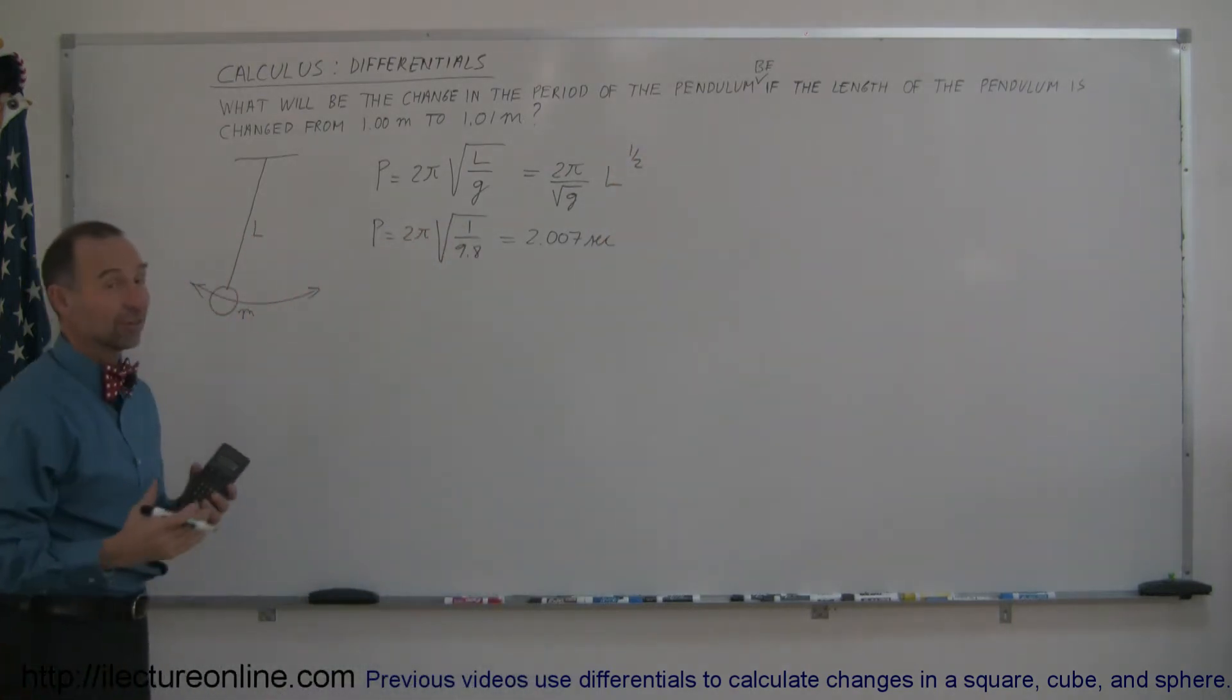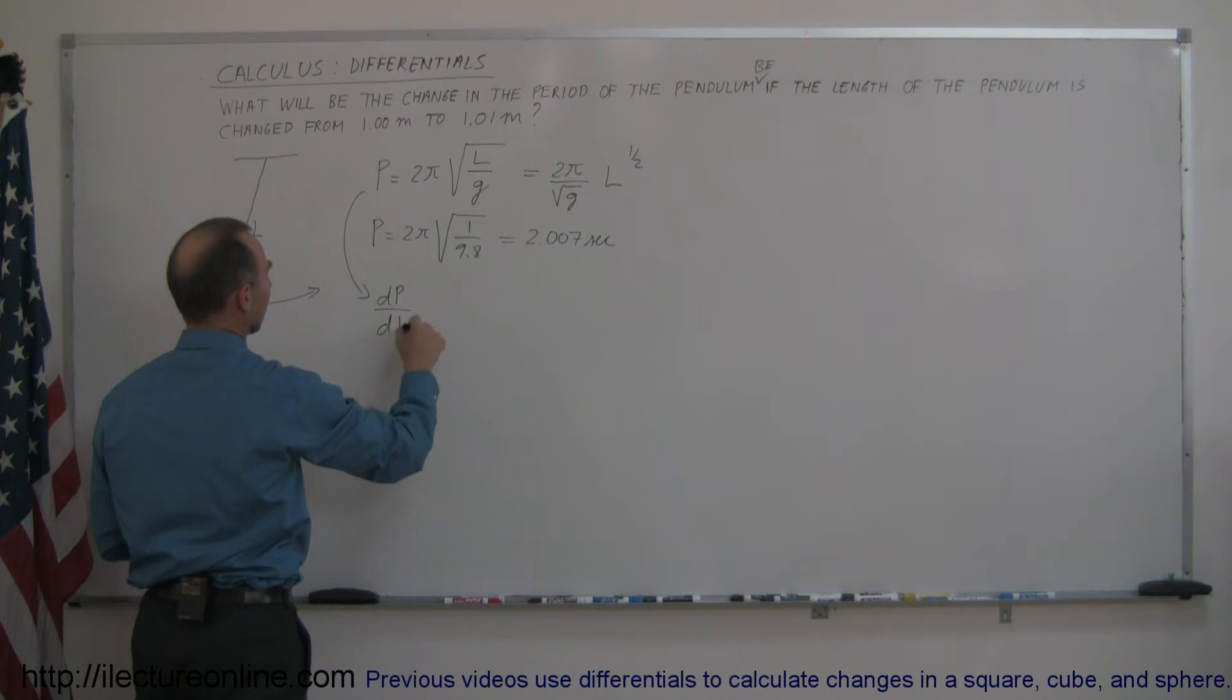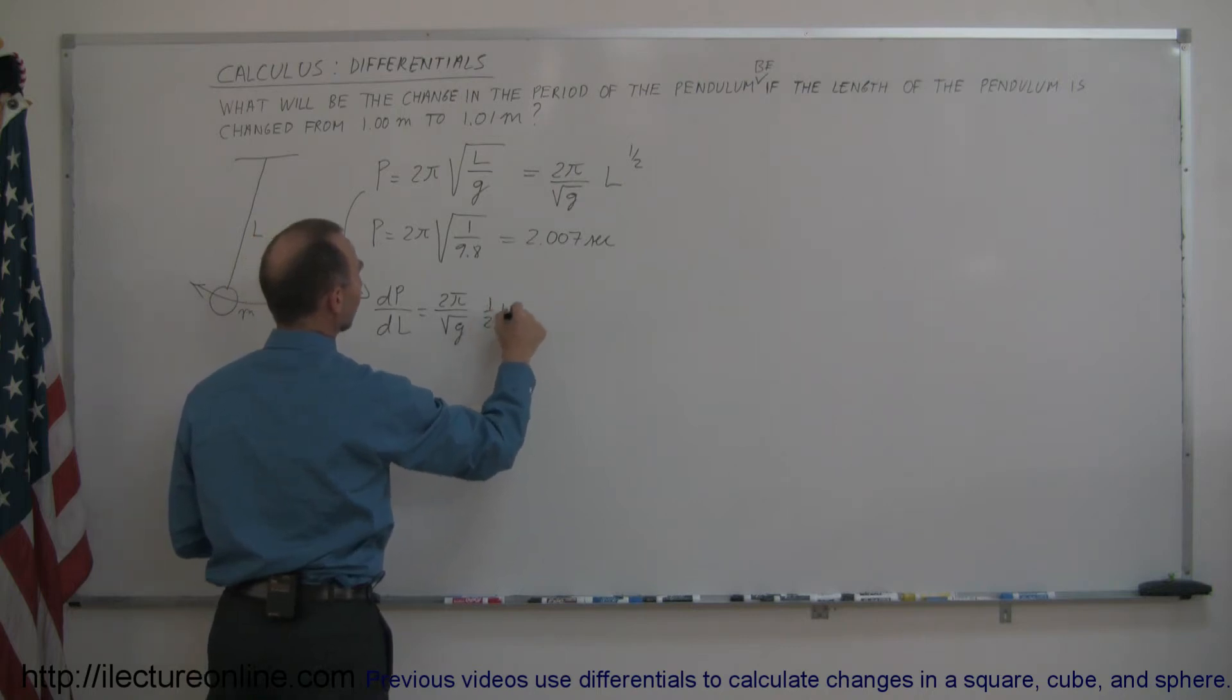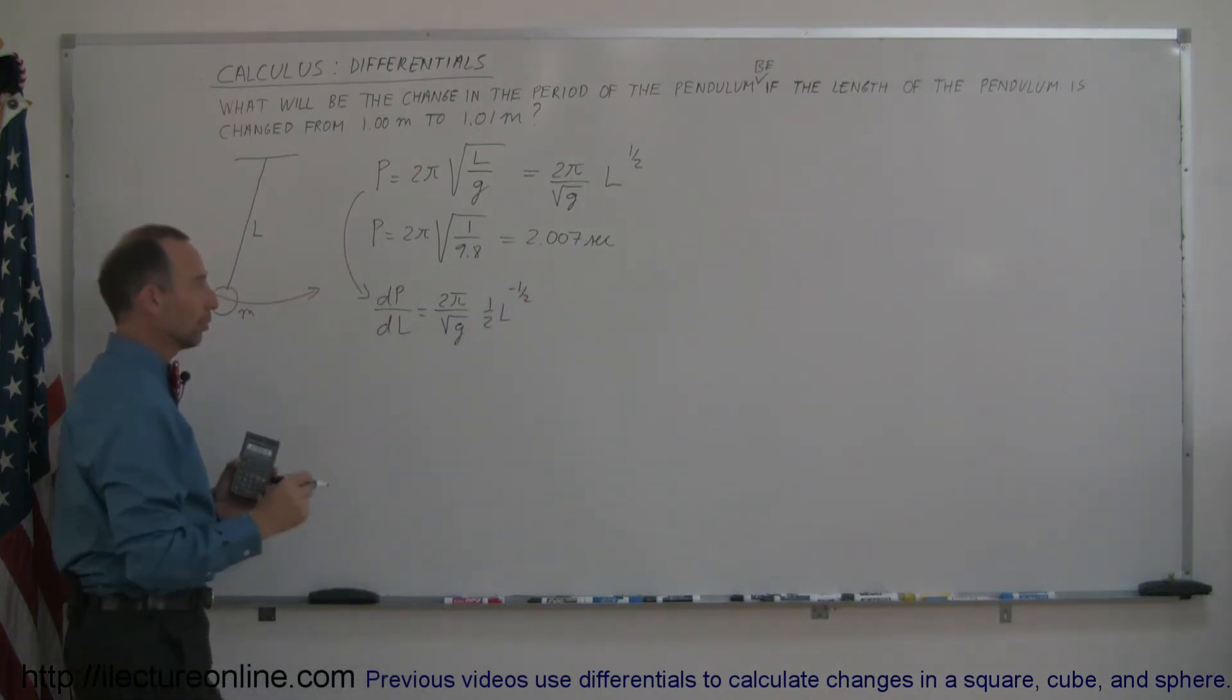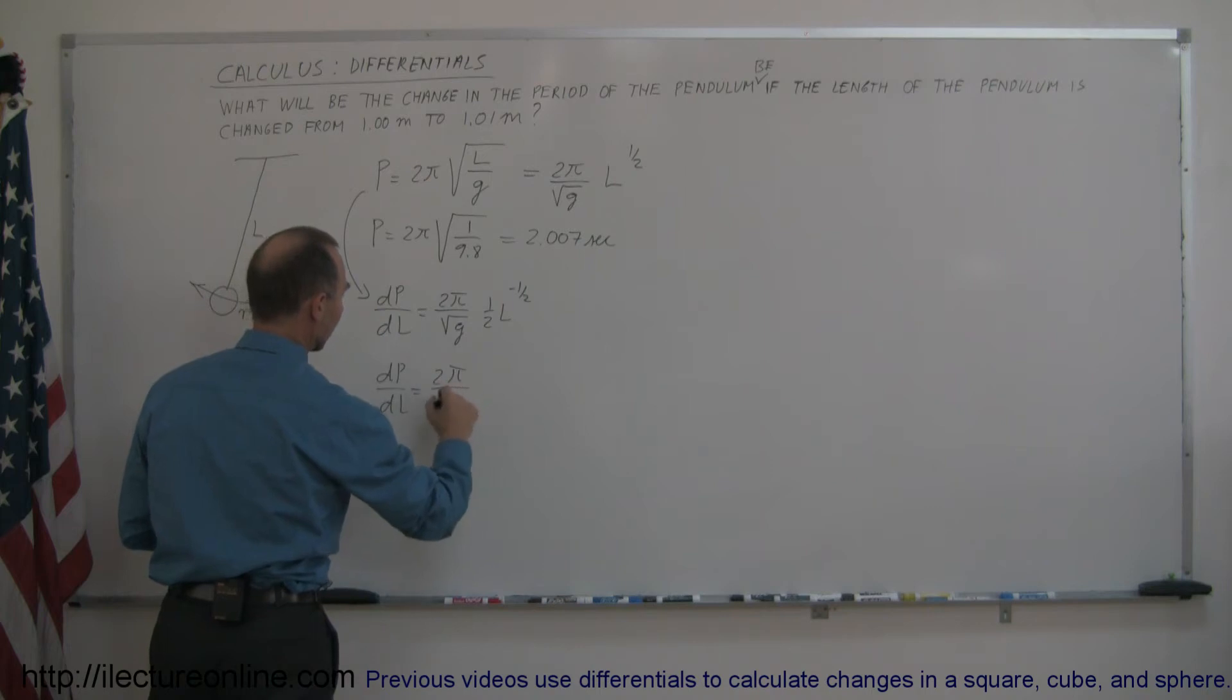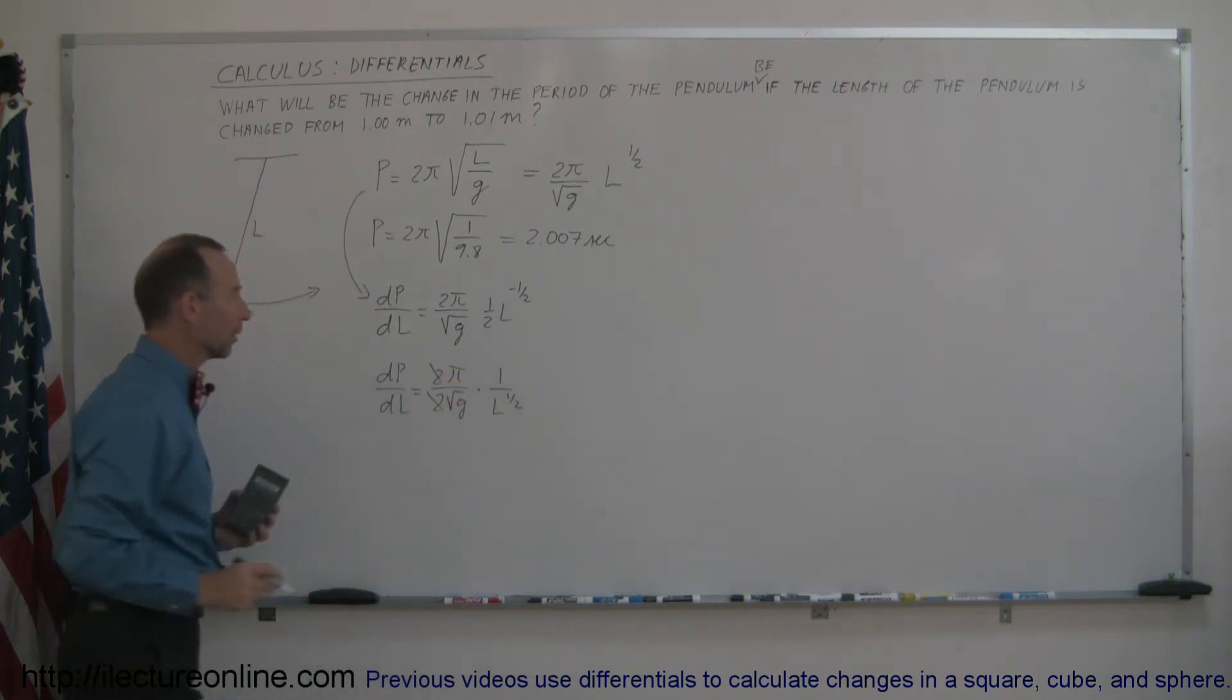Because the square root of l is the same as l to the one-half power. So if we're going to take the derivative of that, dp/dl, that is equal to the constant 2π divided by the square root of g times one-half l to the minus one-half power. And so we could write this as dp/dl is equal to 2π divided by 2 times the square root of g times 1 over l to the one-half power. And of course, these two cancel each other.